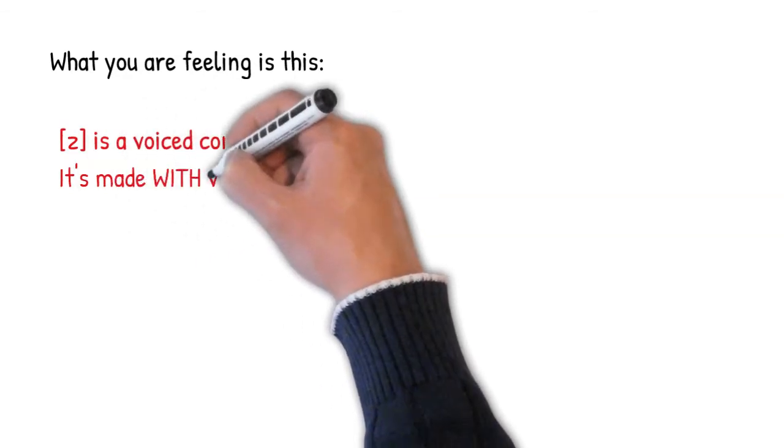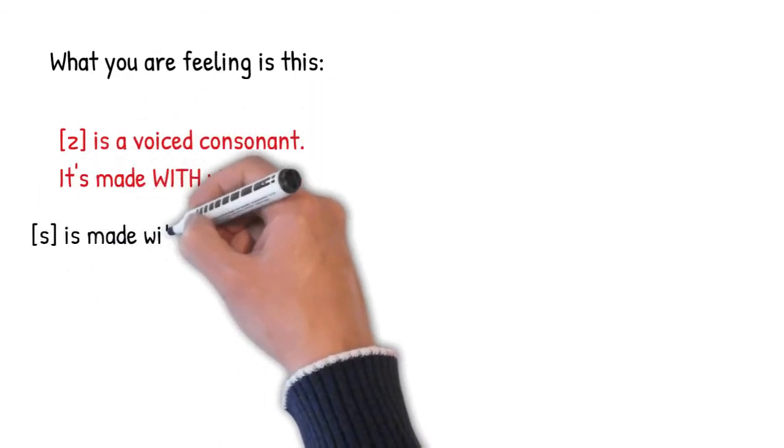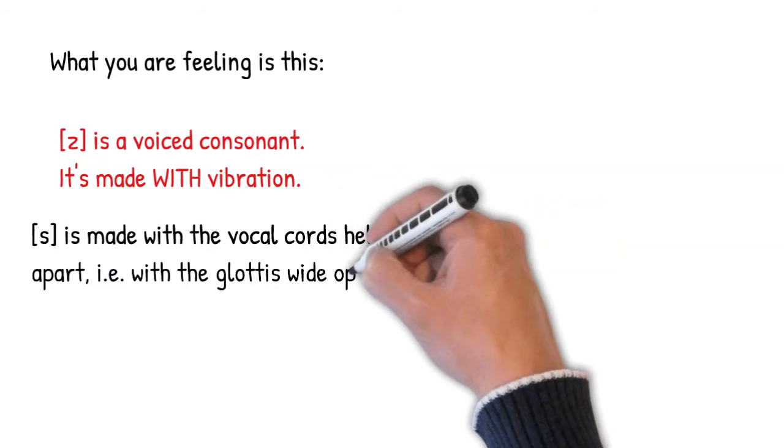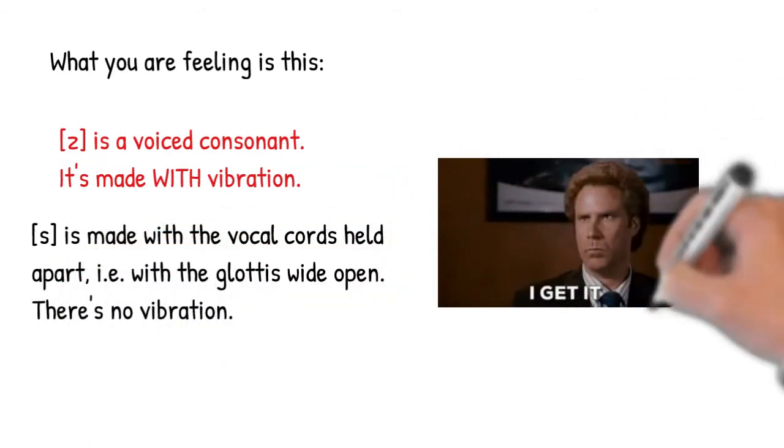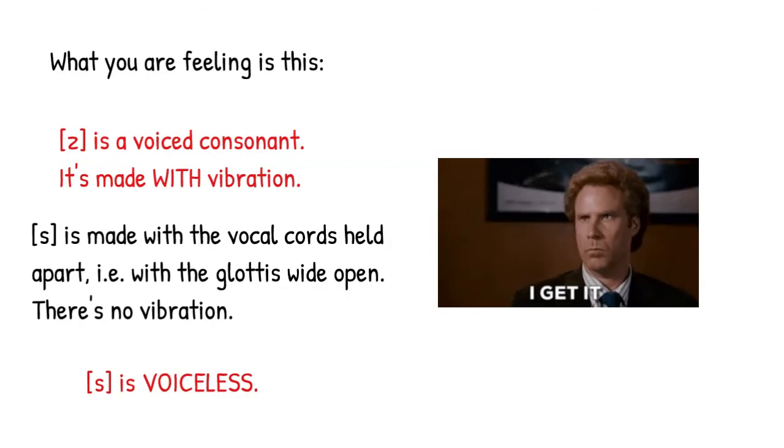What you're feeling is this. The sound Z is a voiced consonant made with vocal cord vibration. By contrast, S is made with the vocal cords held apart. That is, the glottis is wide open, so there's no vibration. S is voiceless.